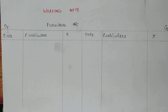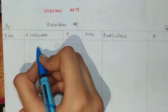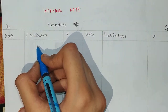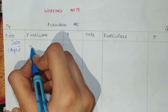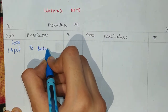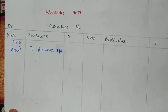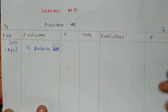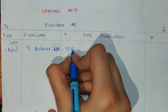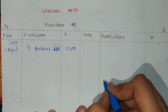For the furniture account, the opening balance is the furniture as an asset. It comes on the debit side as balance brought down. The format of the ledger account has date, particulars, and amount on both sides. Balance brought down as of 1st April 2020 — from the additional information, the fourth point — is $15,000.